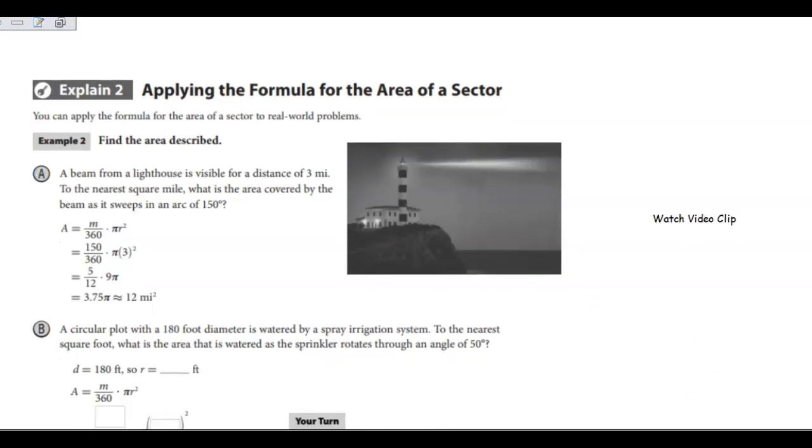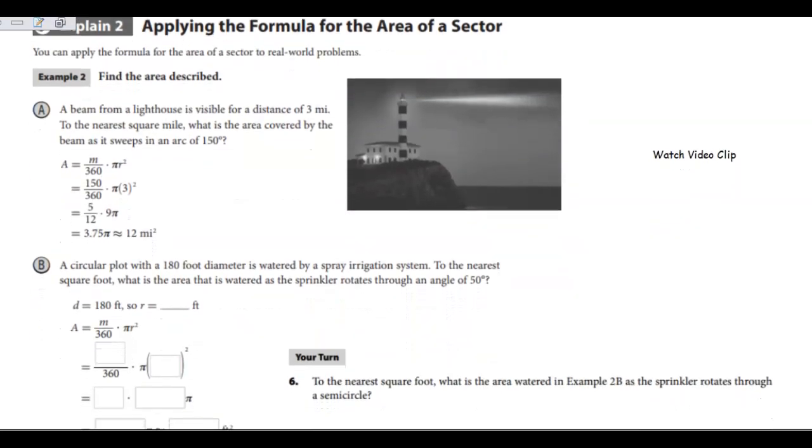We could take the same information and apply it to real-world situations. In this one, a beam from a lighthouse is visible for a distance of 3 miles to the nearest square mile. What is the area covered by the beam as it sweeps in an arc of 150 degrees?